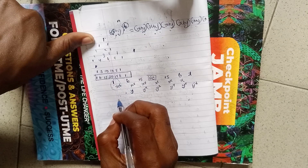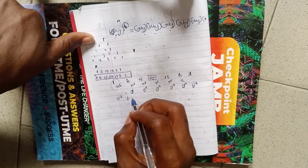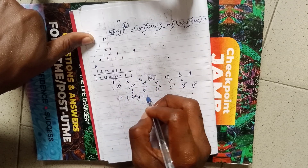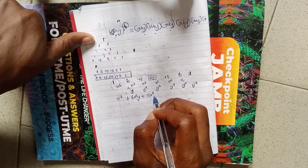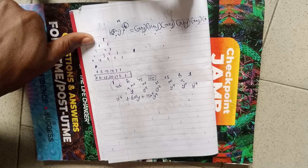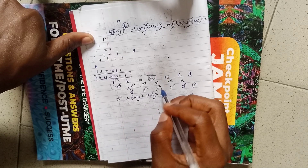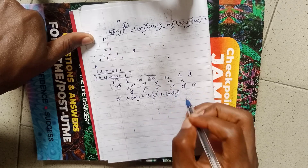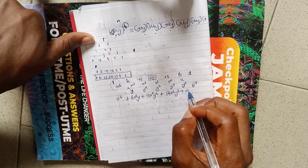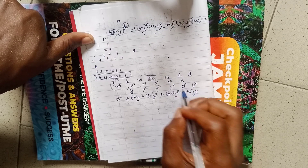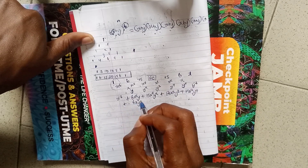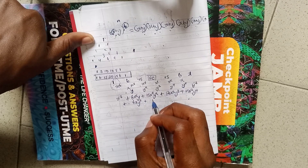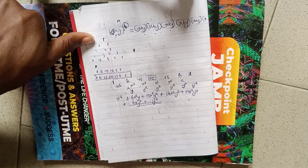The final answer is: x^6 plus 6x^5y — remember we are multiplying the coefficients — plus 15x^4y^2 plus 20x^3y^3 plus 15x^2y^4 plus 6xy^5 plus y^6. So this is the answer.